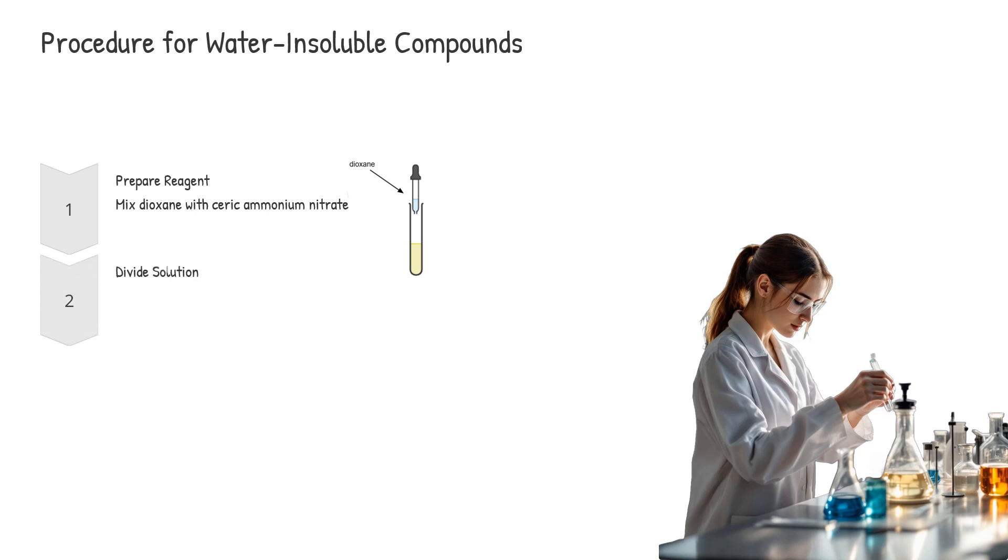For water-insoluble compounds, first prepare a dioxane solution of the reagent. Add 2 milliliters of dioxane to 1 milliliter of ceric ammonium nitrate reagent. If the mixture remains yellow or light orange, it can be used. Divide the solution, keeping half as a control. To the other half, add 4-5 drops of liquid or 0.1 to 0.2 grams of solid. Mix thoroughly and observe for color change as in the water-soluble procedure.